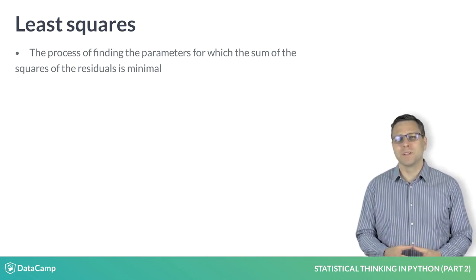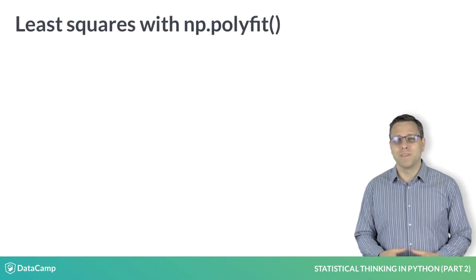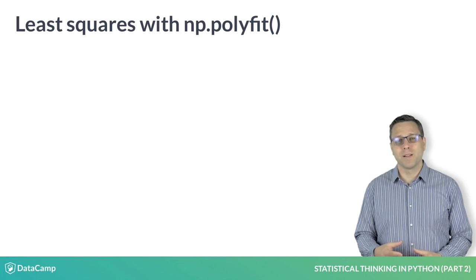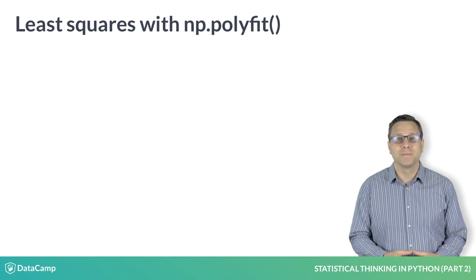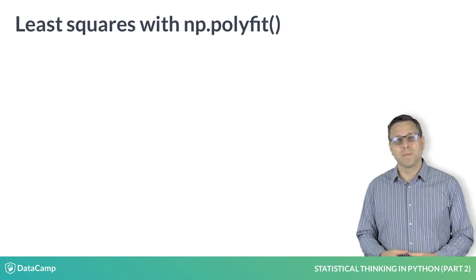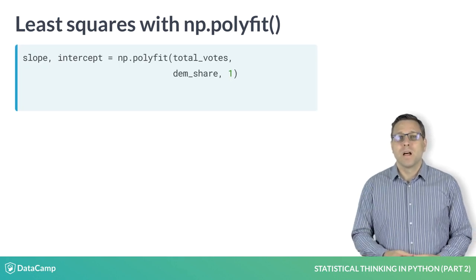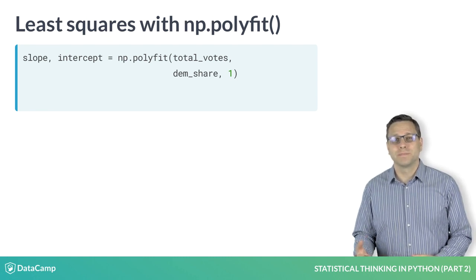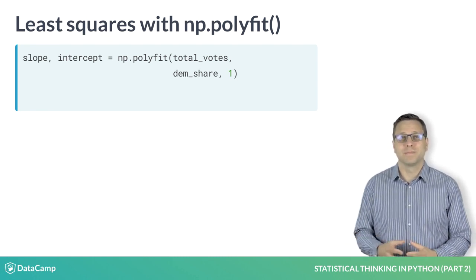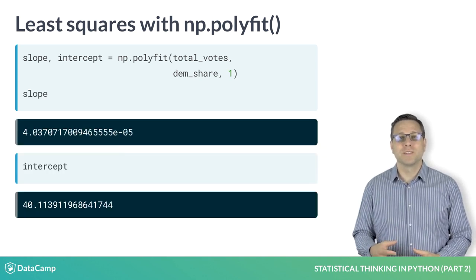There are many algorithms to do this in practice. We will use the numpy function polyfit, which performs least squares analysis with polynomial functions. We can use it because a linear function is a first degree polynomial. The first two arguments to this function are the x and y data. The third argument is the degree of the polynomial you wish to fit. For linear functions, we enter one. The function returns the slope and intercept of the best fit line.